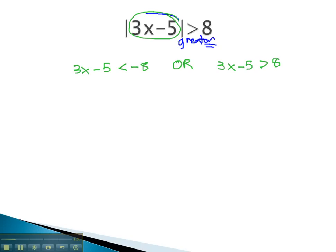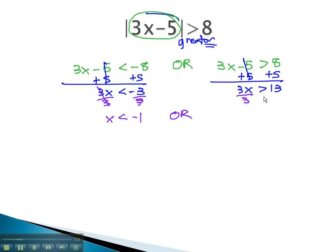And then we can simply solve this compound inequality as always. Starting by adding 5 to both sides, we get 3x is less than negative 3. Dividing by 3 gives us x is less than negative 1. Or, to solve the second one, we add 5, giving us 3x is greater than 13. Divide by 3 to get the fraction x is greater than 13 thirds.